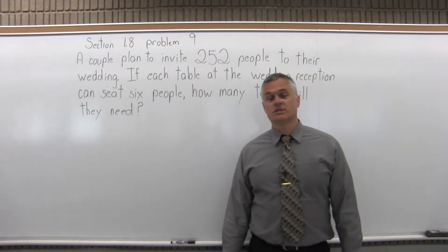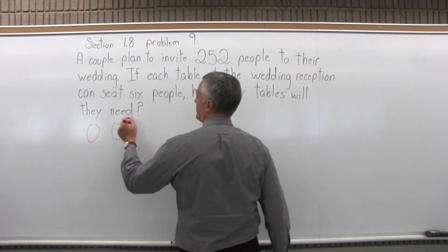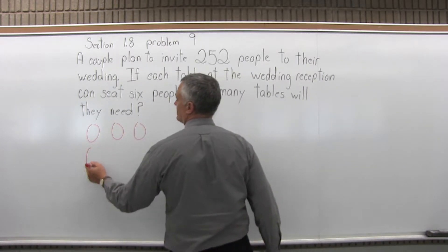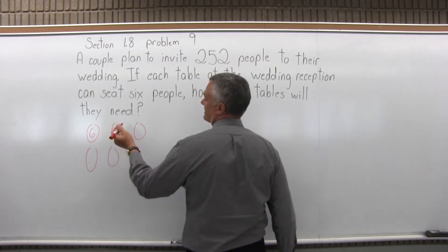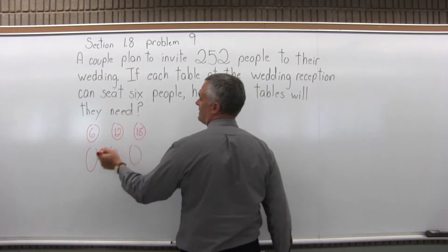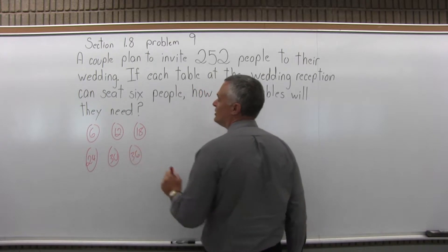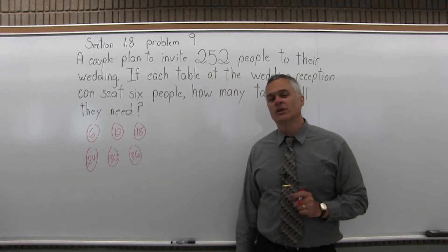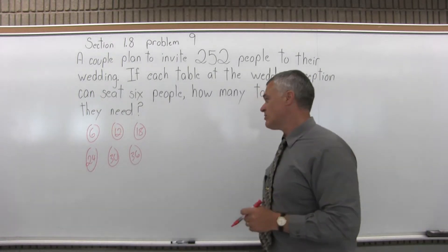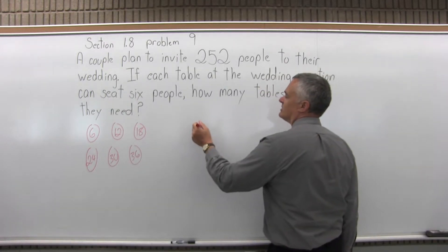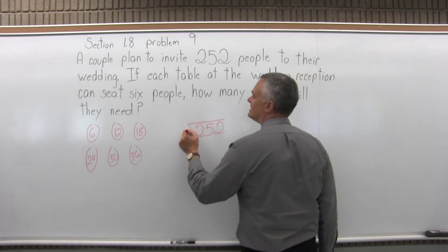There's more than one approach to this problem. You can just start putting in tables, figuring that there's 6 people at each table, and start keeping track. One table is 6, the second table is 12, after that you're up to 18, 6 more is 24, then 30, then 36. You'll eventually get to 252, but it'll take a while — you'll have to draw a lot of tables, but it will work.